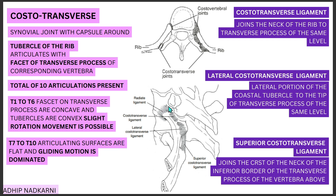The ligaments at the costotransverse joint include: the costotransverse ligament, which joins the neck of the rib to the transverse process of the same level; and the lateral costotransverse ligament, which attaches the lateral portion of the costal tubercle to the tip of the transverse process at the same level.